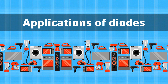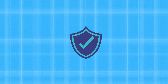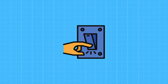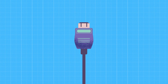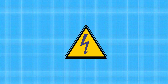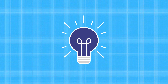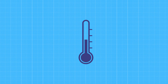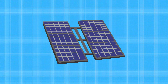Diodes are literally used in every device that uses electronics. Some of the most common examples include: protection against reverse current, reverse polarity, and surges; as a switch; source isolation; as a voltage reference; as a light source; as a temperature sensor; and as a solar cell. As you can see, diodes have a wide range of applications.